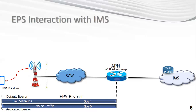This is a high-level view of EPS interaction with the IMS. EPS means EUTRAN plus EPC: to access the IMS, the user first goes to the EUTRAN via the eNodeB, then registers on the EPC through the MME, then opens a default bearer through the S-Gateway and P-Gateway to access the IMS network.